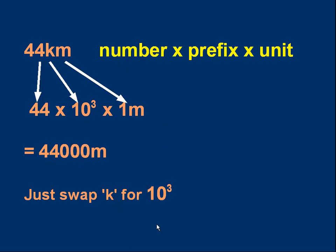Let's look at a number which uses a prefix: 44 kilometers. It's actually the product of three separate things. The 44 is a number. The m at the end is one meter - it's a unit. And the thing before the unit is a prefix. k means 10³, a thousand. So in fact this means 44 × 10³ × 1 meter. And all we have to do is swap the k for 10³ to work out the value. Just write 44 × 10³.